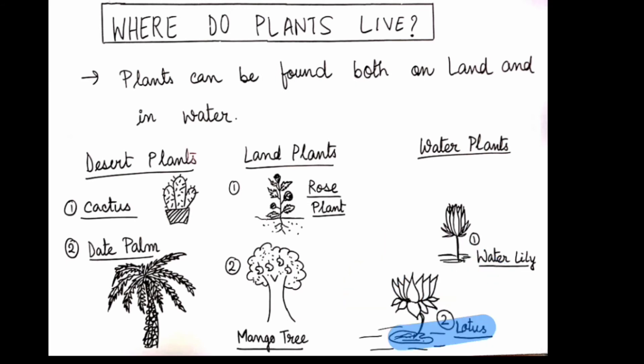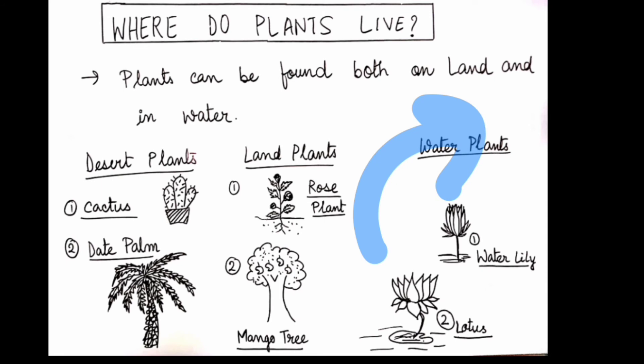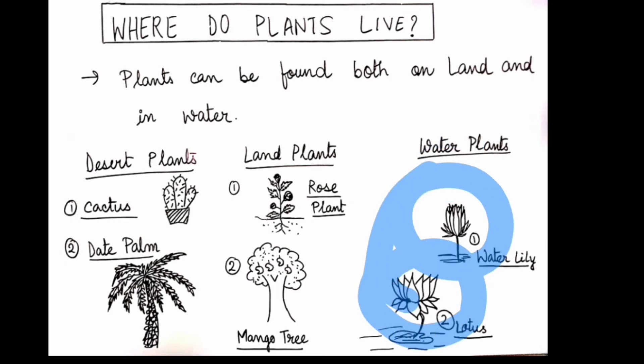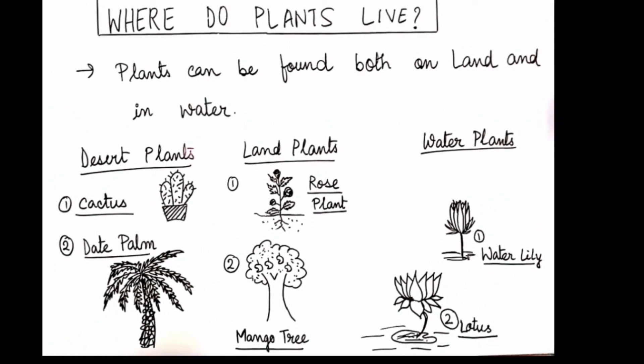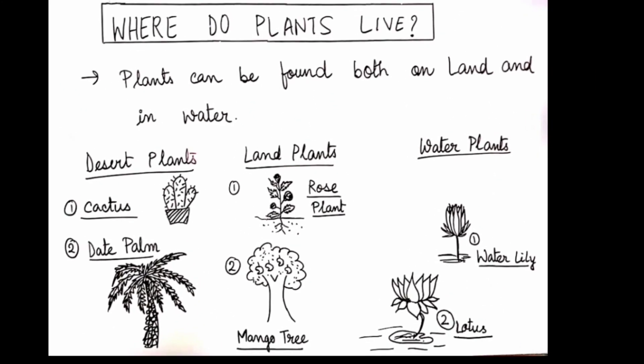Lotus is a type of water plant. These lotuses and lilies have special parts which help them to float in water. The lotus has a big, broad leaf, which you can see here. This broad leaf helps it to float in the water and survive.